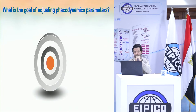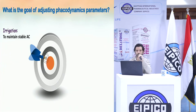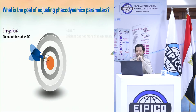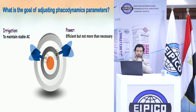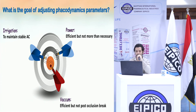The goal of adjusting the phacodynamics parameters is to understand the three main parameters. The first is irrigation, which is the source of flow inside the eye and is used to maintain the anterior chamber stable. The second is power, used to emulsify the nuclear material — we need to deliver efficient but sufficient phacoemulsification power. The third parameter is vacuum, which is necessary for holdability of the nuclear matter and should be efficient but not too high, to avoid post-occlusion break.